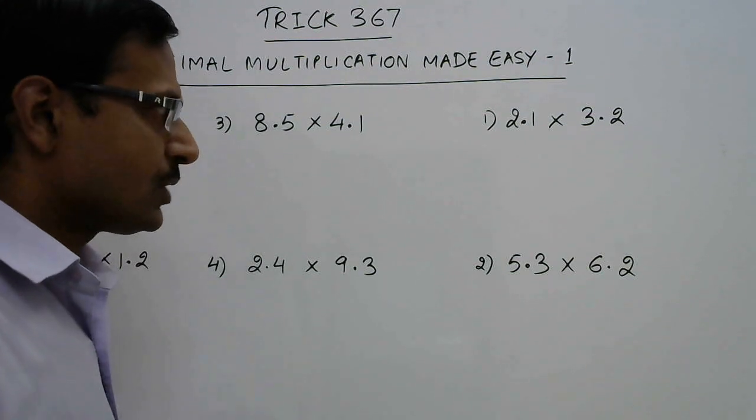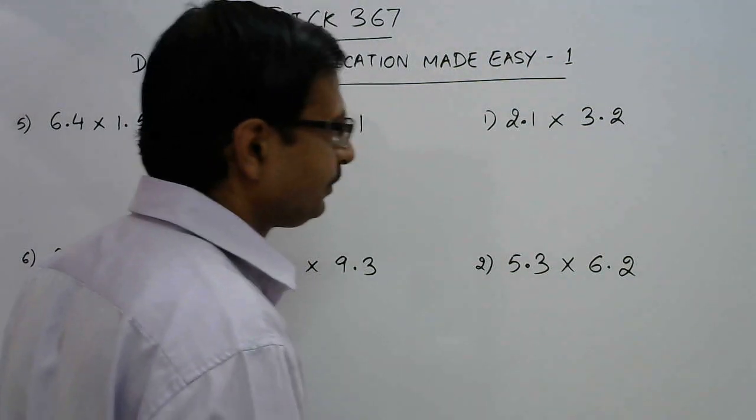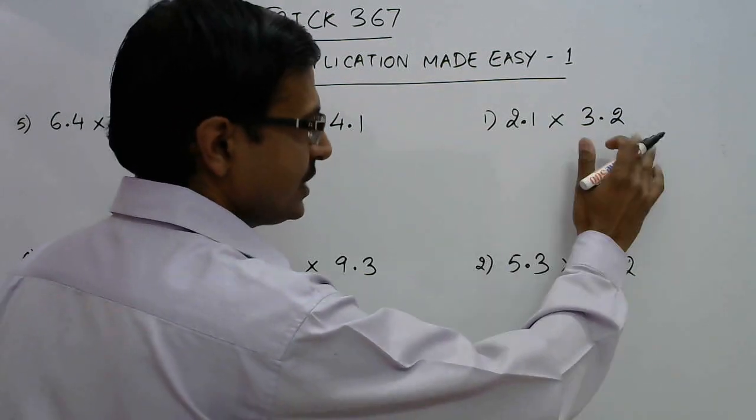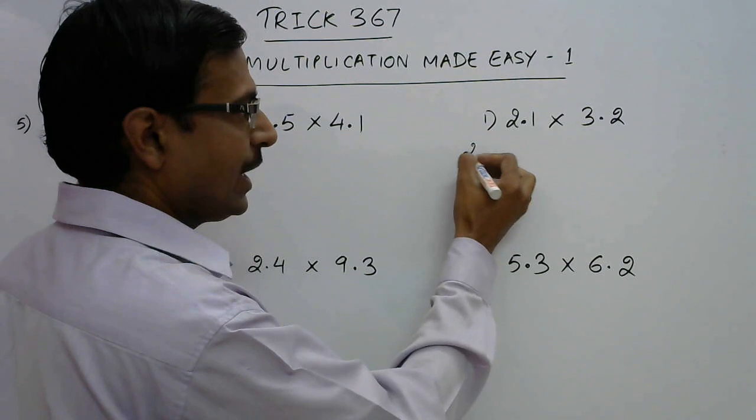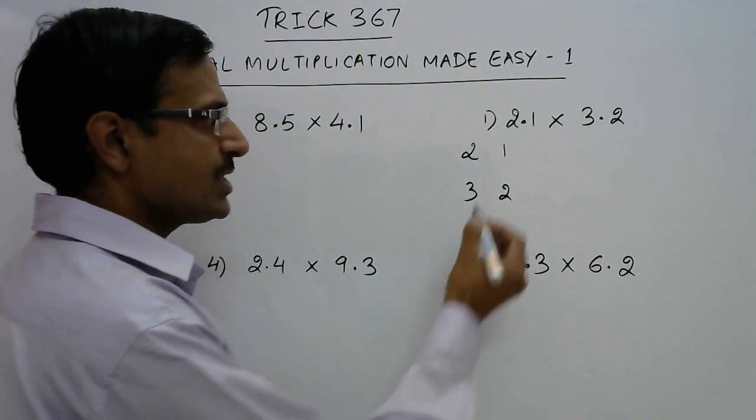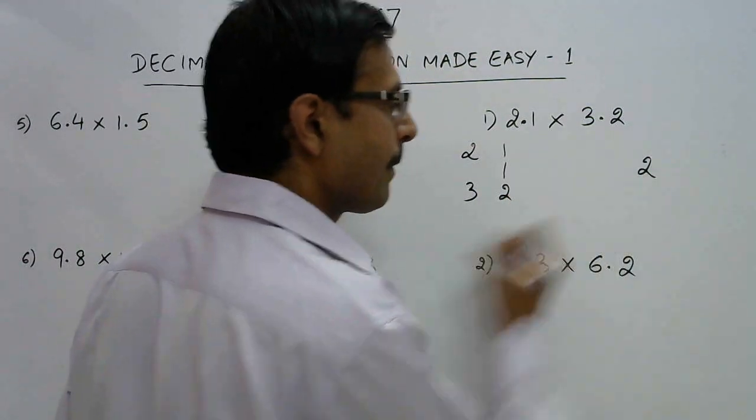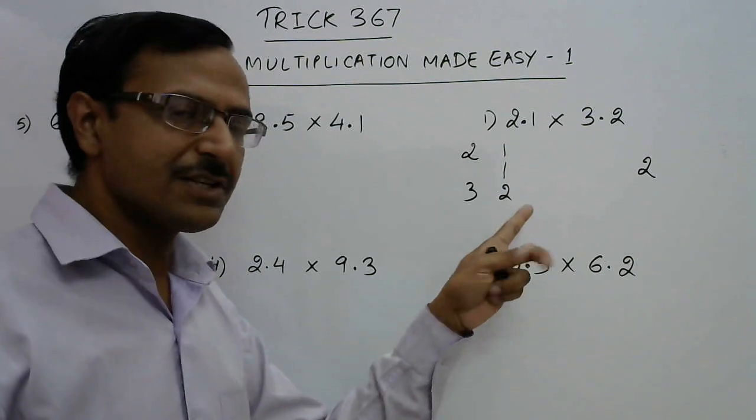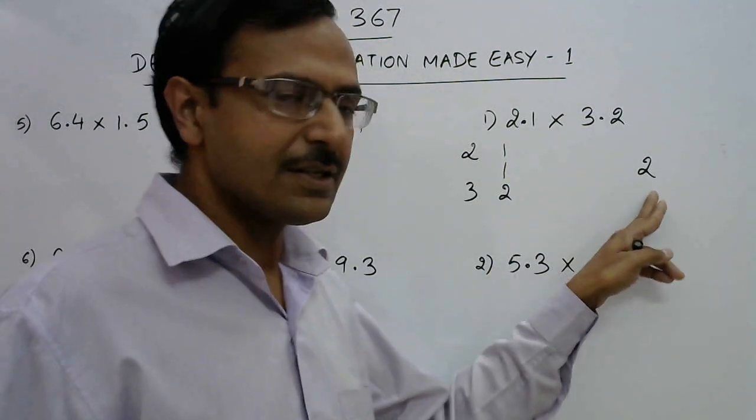Now see I am going to solve this using three steps. The first step is whenever you have two digits, say 21 and 32, the first thing is you just multiply the unit places, 2 ones and 2, so write 2 here. Obviously it is a single digit number so you don't need to remember the carry number.